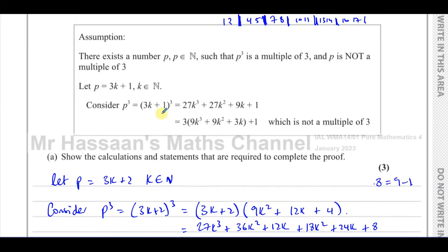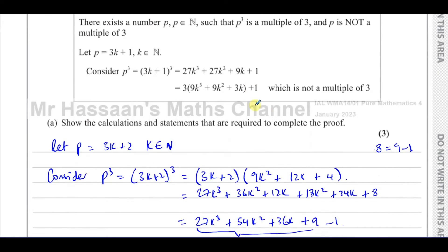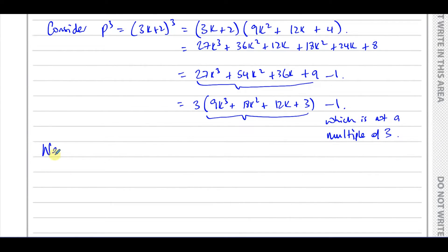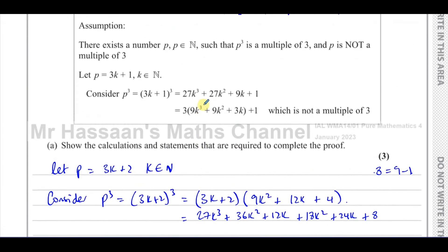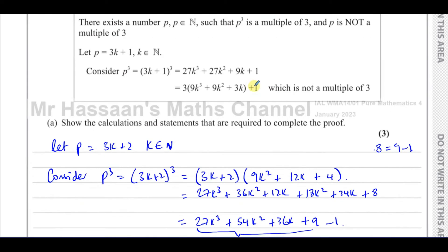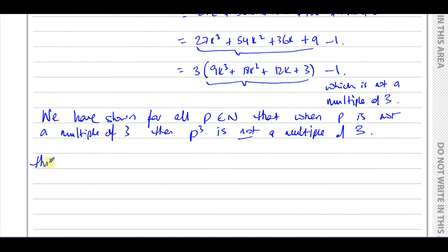We have now proved for all values of P in the natural numbers that when P is not a multiple of 3, then P cubed is also not a multiple of 3. This contradicts our assumption.